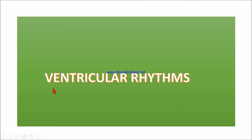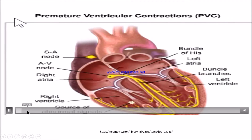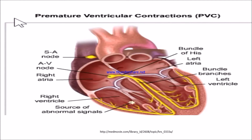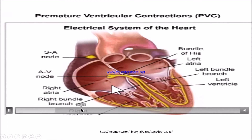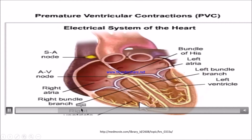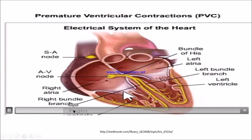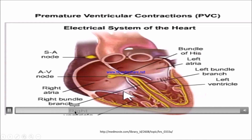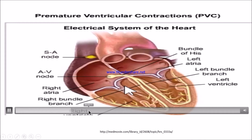Let's see about some ventricular rhythms, starting with the premature ventricular contraction. When there is a premature ventricular contraction, it is an abnormal heartbeat in which the ventricle contracts early without receiving signals from the AV node.